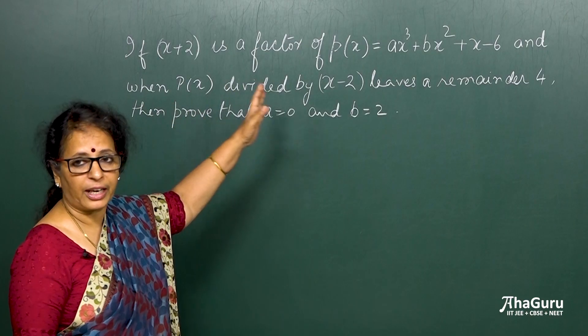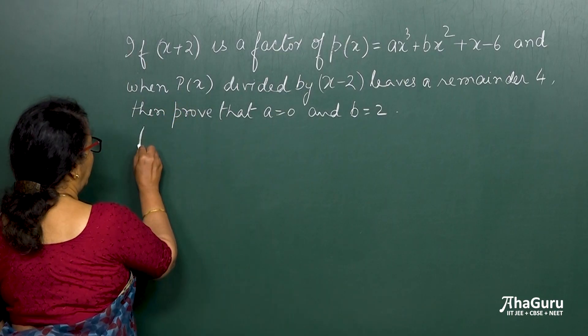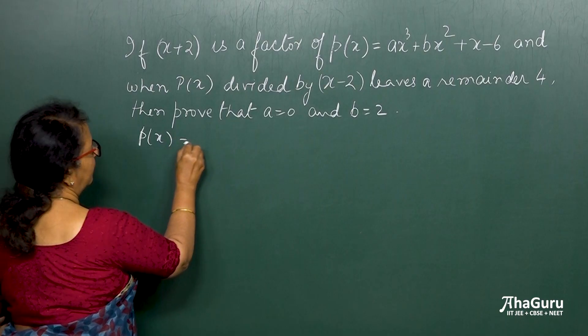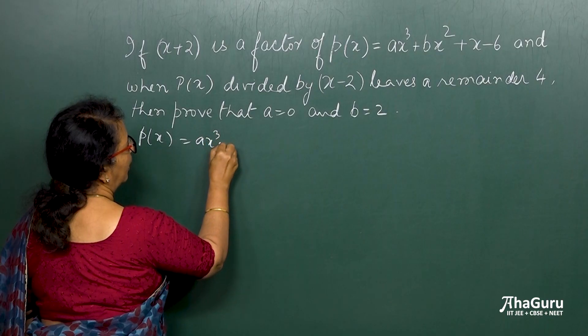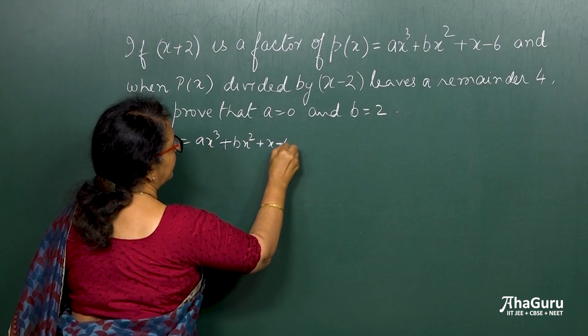So let us first put them as a factor theorem. So if I say x plus 2 is a factor and you have p of x which is given as ax cube plus bx square plus x minus 6.